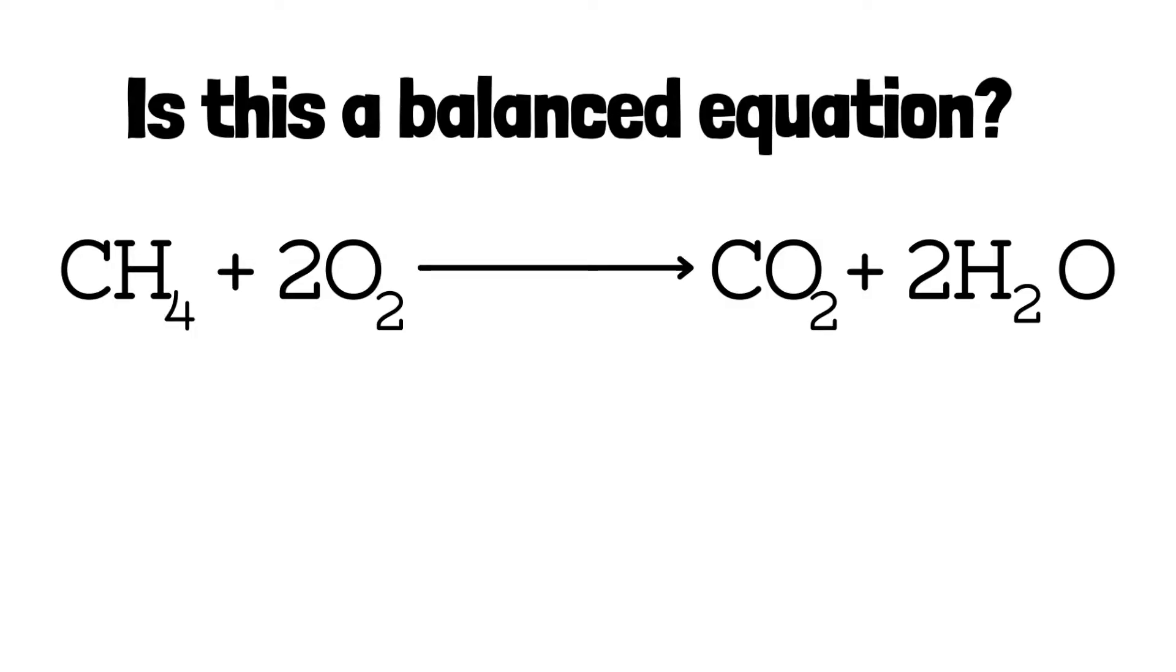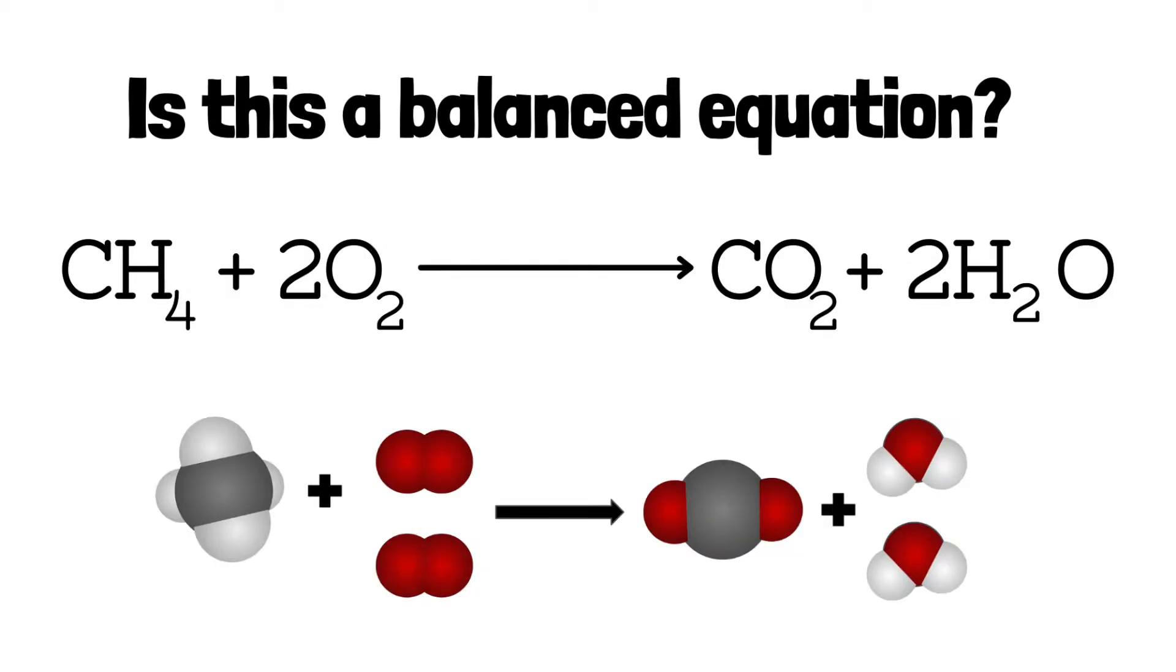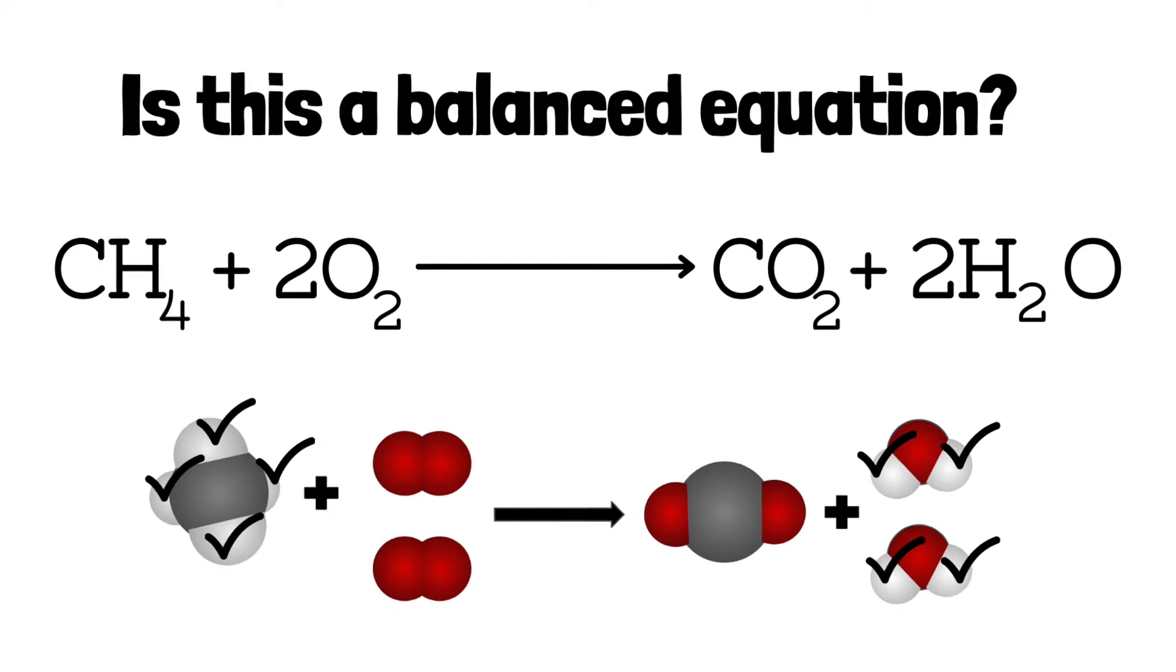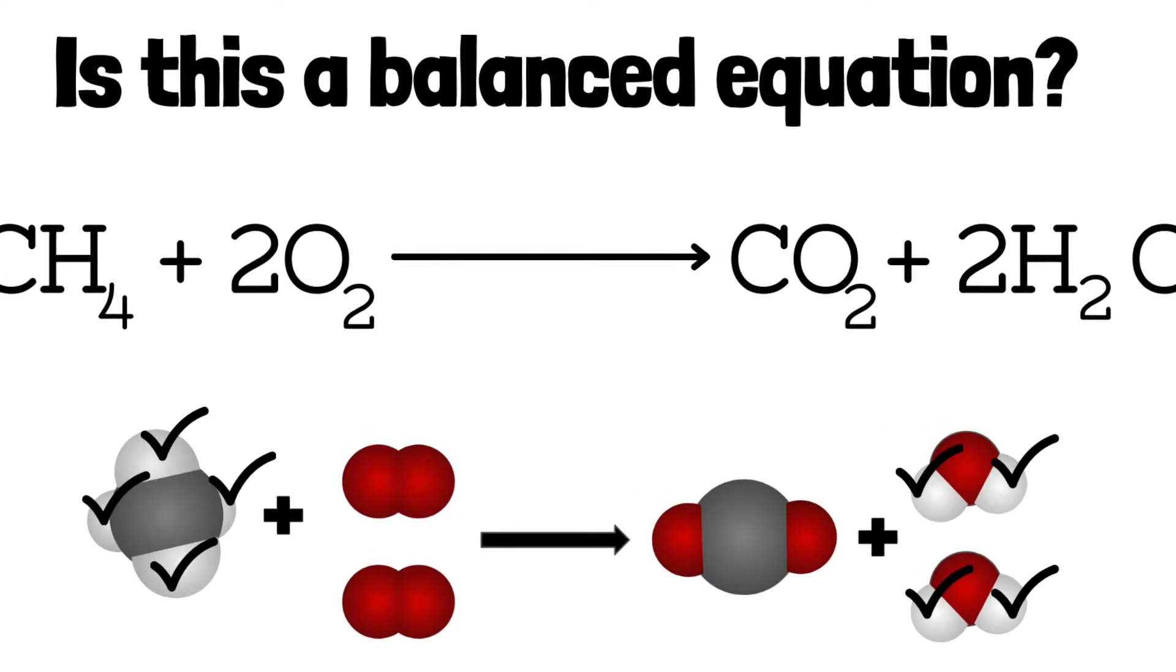In other words, do we have the same amount of atoms on the left side, the reactant, as we do on the right side, the product? And sometimes you have models of molecules and elements beneath an equation and you can sort of check them off to determine if you have the same amount in the reactant as you do in the product.